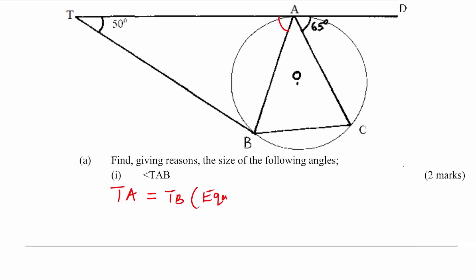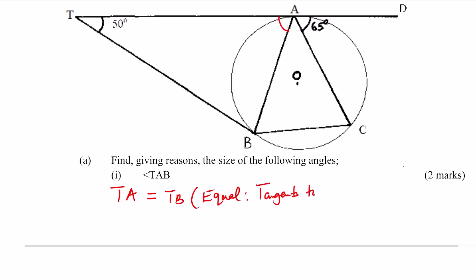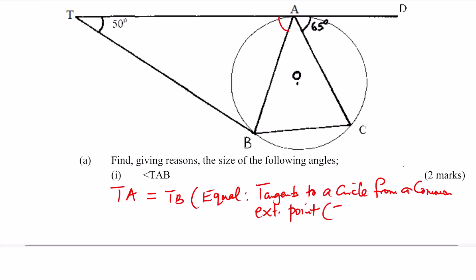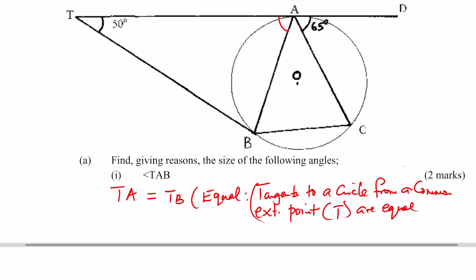They are equal because tangents to a circle from a common external point — in this case the external point is T — are equal. So TB is equivalent to TA.